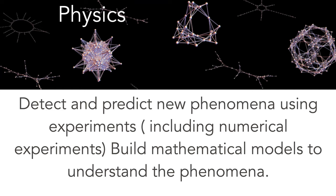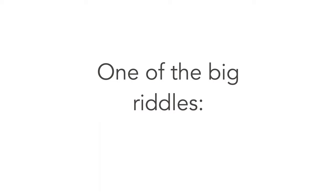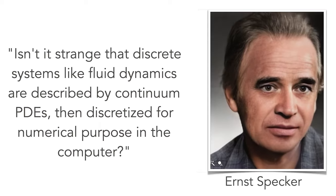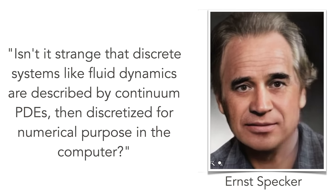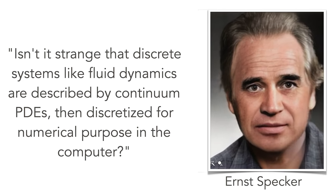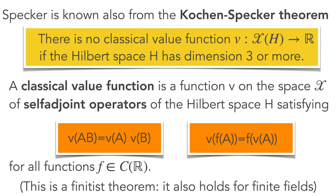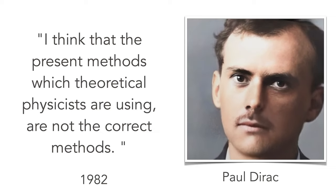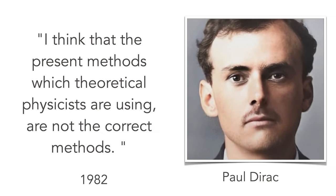For me, it's also including numerical experiments. In some sense, experimental mathematics is physics. Then build mathematical models to understand the phenomena. One of the big riddles I learned from Ernst Specker, another teacher of mine: it's strange that discrete systems like fluid dynamics are described by continuum PDEs, but then discretized for numerical purposes in the computer. So you go from the discrete to the continuum, and then again to the discrete. Specker is also known in physics for the Kochen-Specker theorem. It's an affinities theorem, completely discrete. You can formulate it over a finite field.